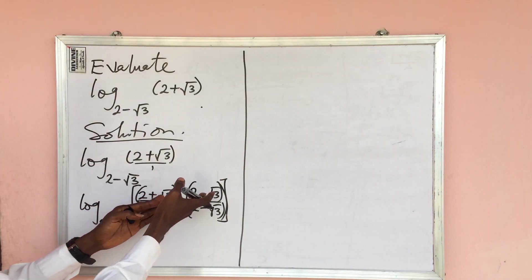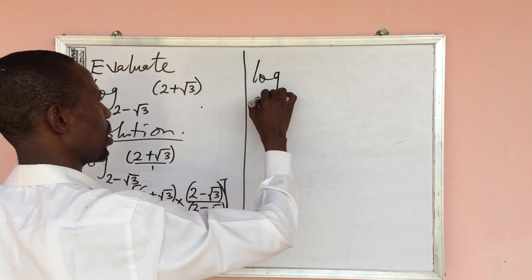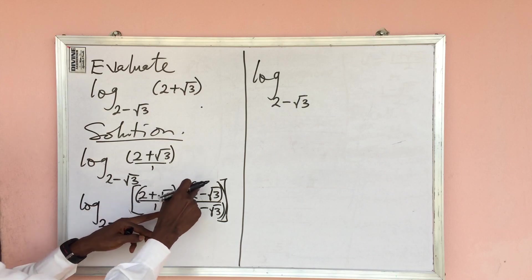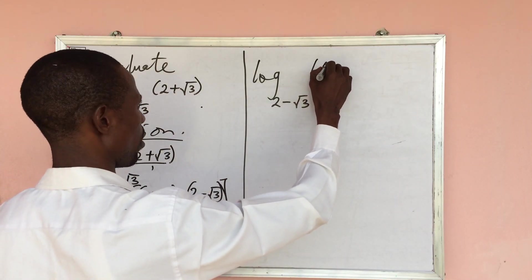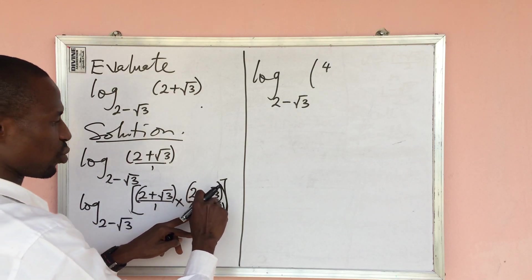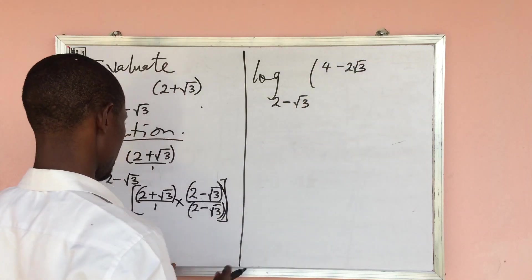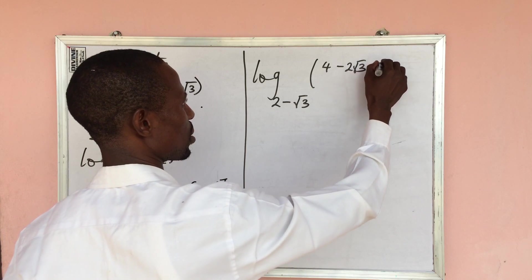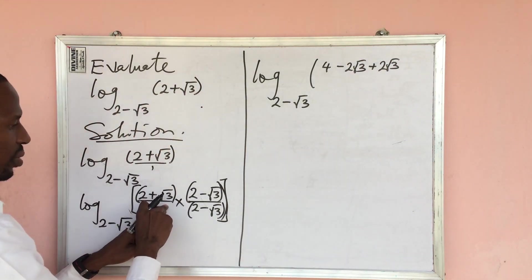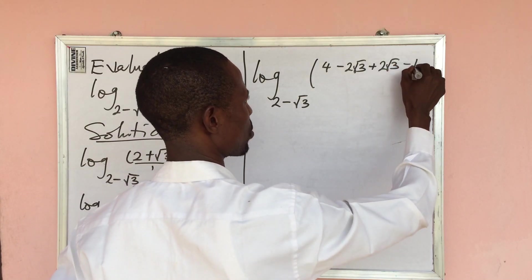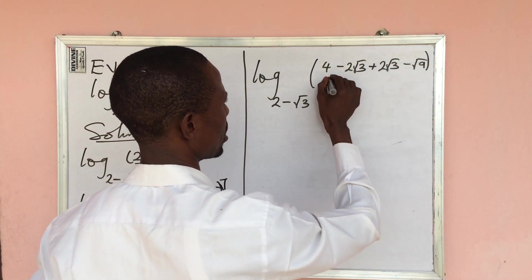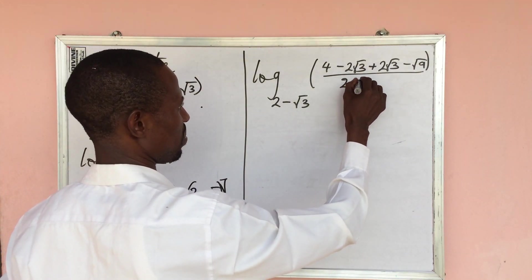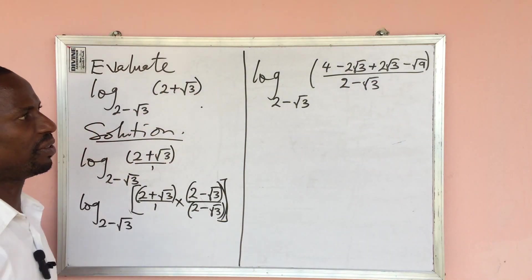Now let's expand the numerator. We have (2 + √3)(2 − √3): 2 times 2 gives 4, 2 times −√3 gives −2√3, √3 times 2 gives +2√3, and √3 times −√3 gives −√9. The denominator is (2 − √3).